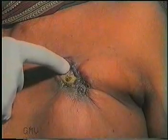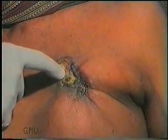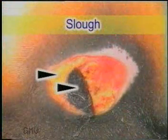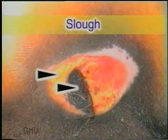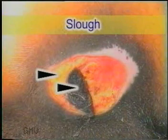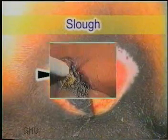Now palpate the granulation tissue over the floor and note whether it bleeds on touch. Healthy granulation tissue shows pinpoint hemorrhagic spots, while a malignant ulcer may bleed profusely — as seen in this epithelioma over the scalp. If there is slough over the floor, note whether it is attached loosely or firmly.